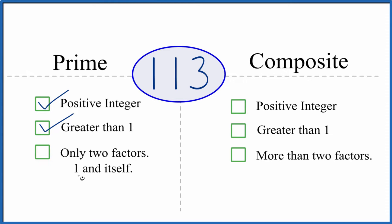Does it have only two factors, 1 and itself? Well, 1 and 113 divide evenly into 113. So 1 times 113, we know that will go in evenly.